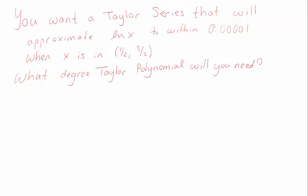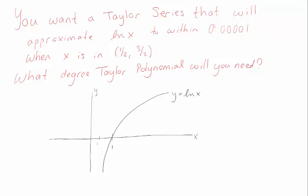Let's think about the kind of Taylor polynomial we might use. Remember that natural log of x crosses the x-axis at 1, and that's really our only good choice for an anchor point — also called the center of the Taylor series. We're concerned with values from a half to three halves, so 1 is right in the middle, and log of 1 equals 0, which is something we can easily calculate with.